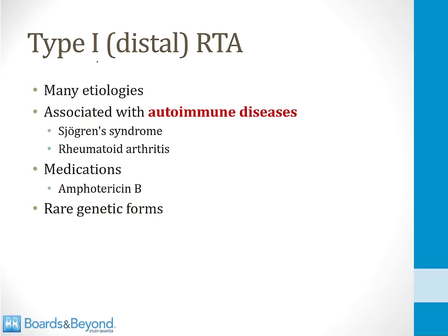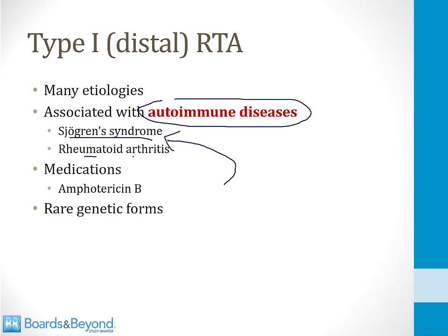There are many etiologies of a distal RTA, but a classic association of type 1 RTA is with autoimmune diseases, especially Sjogren's syndrome or rheumatoid arthritis. Any board question describing a patient with one of these conditions who develops a metabolic acidosis — you should think of a distal RTA. In addition, there are medications associated with this condition. Amphotericin B is an antifungal drug that is a classic cause of a distal RTA, and there are rare genetic forms that can be seen in children.